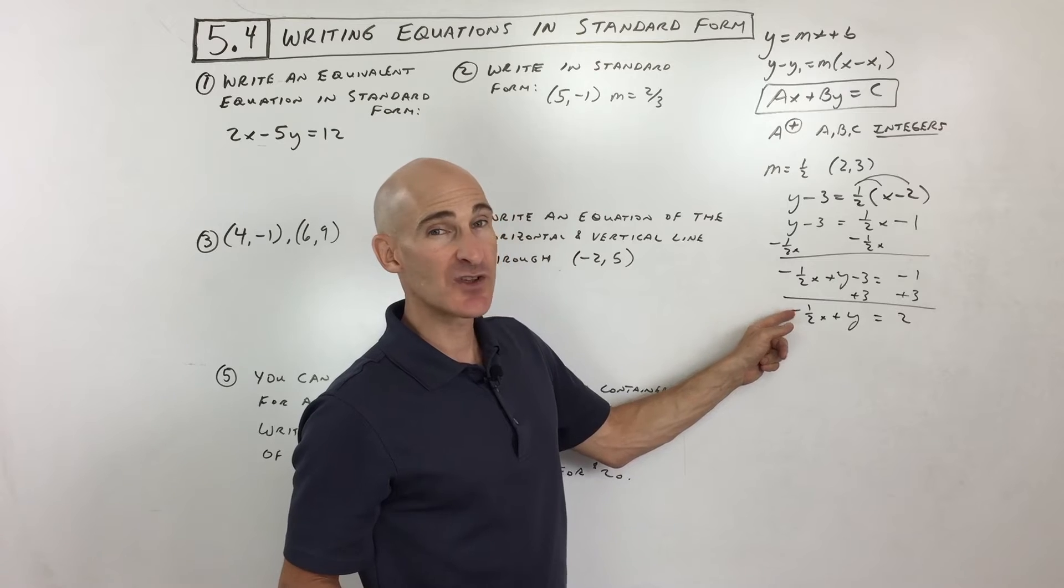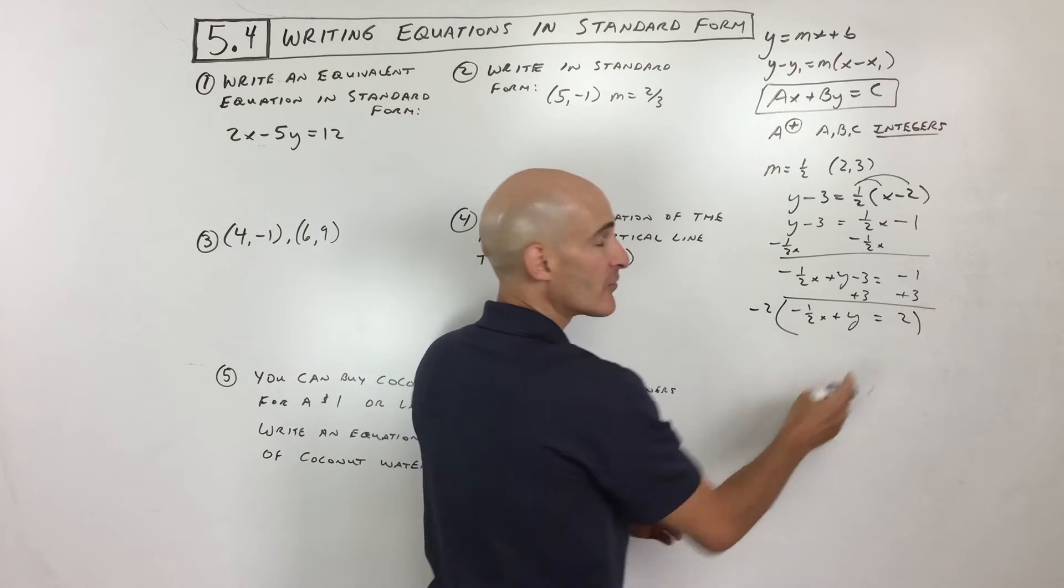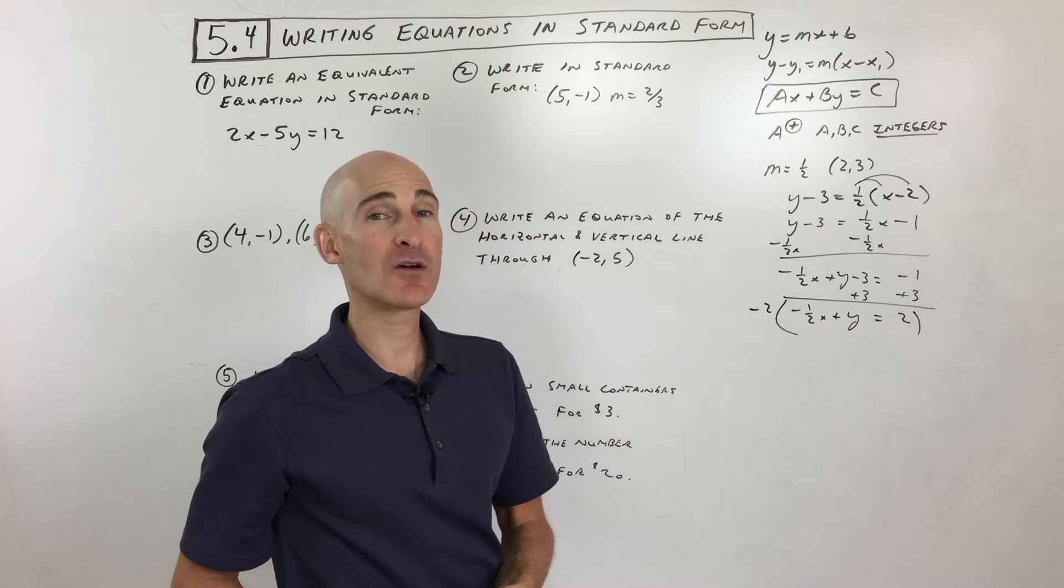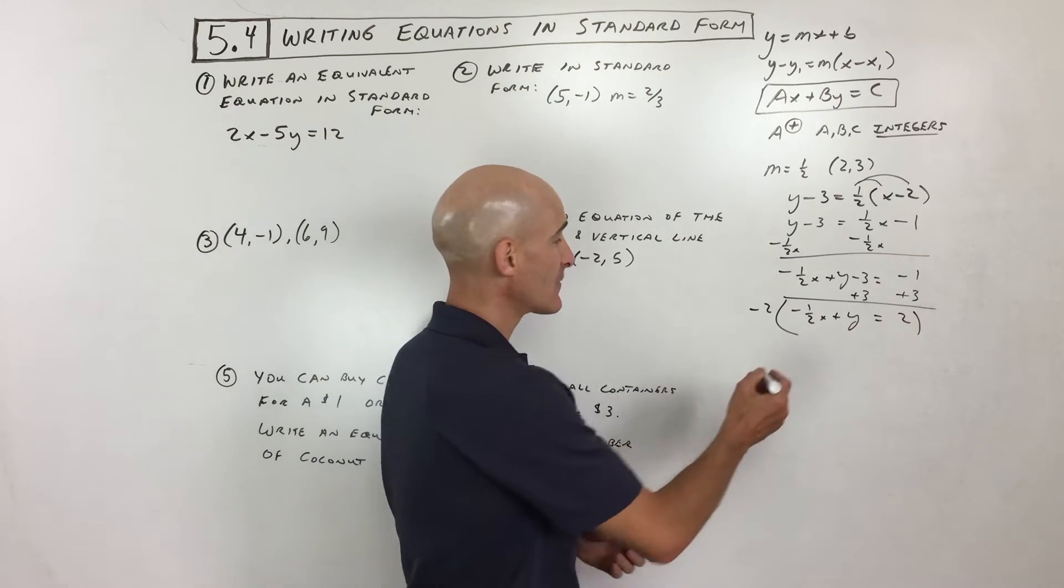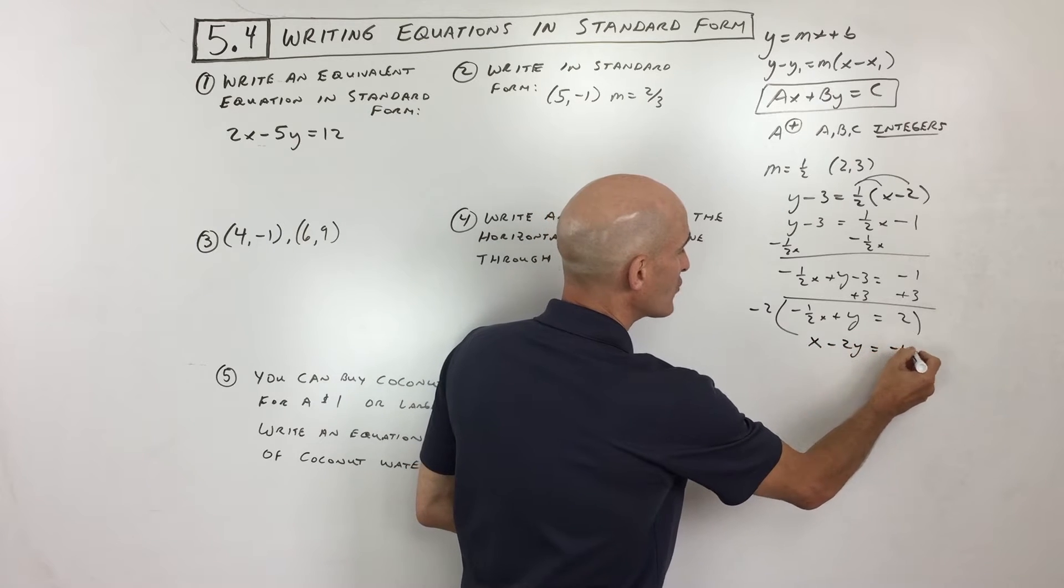And then also, we don't want this to be negative. So let's multiply through everything by a negative 2. If we do that to the left, the right side of the equation, that's an equivalent equation. It's still going to be the same line. It's just going to be in a slightly different form.